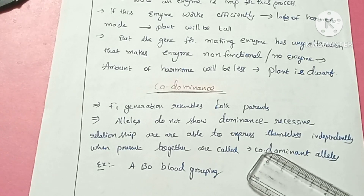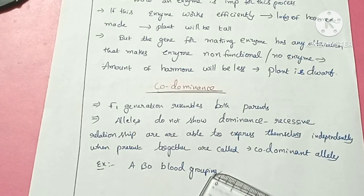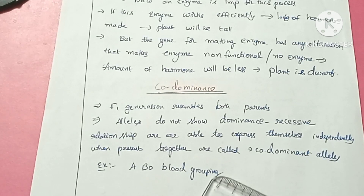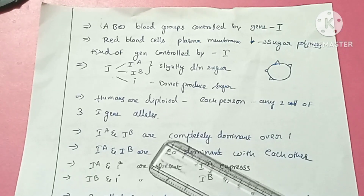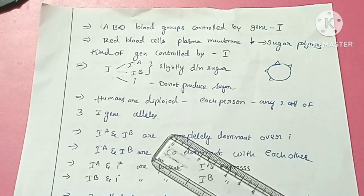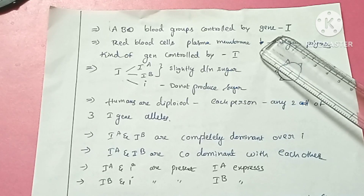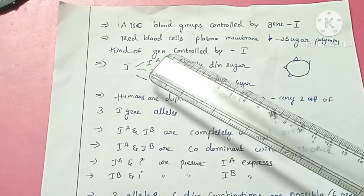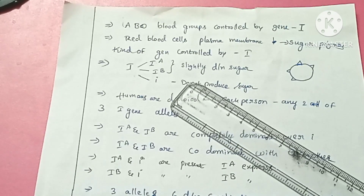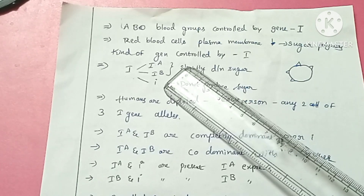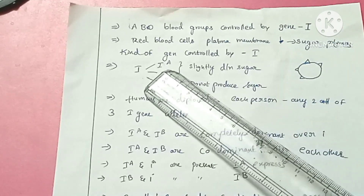An example of co-dominance is ABO blood grouping. There are different types of blood groups in human beings: A, B, AB, and O blood groups. The gene responsible for ABO blood groups is the I gene. The red blood cells have a plasma membrane with sugar polymers, and the I gene controls these sugars.